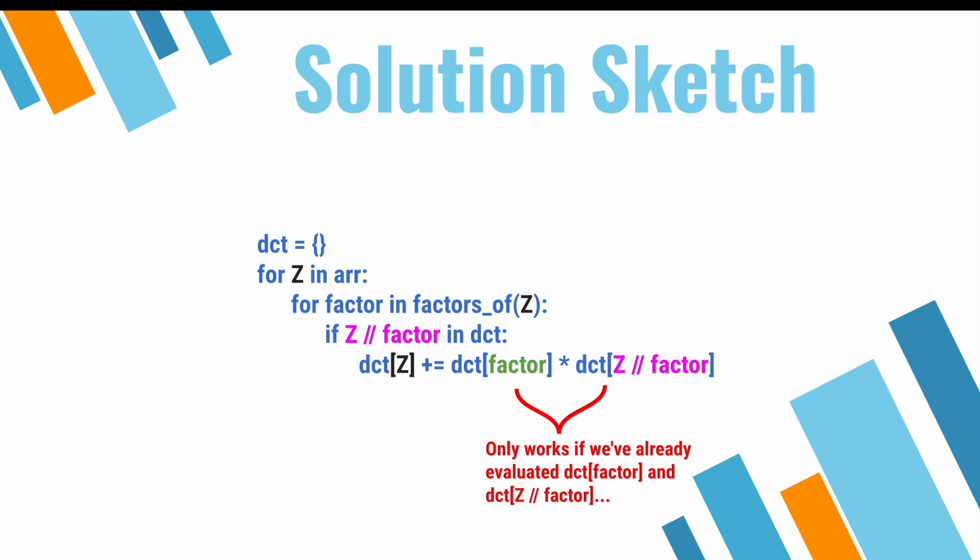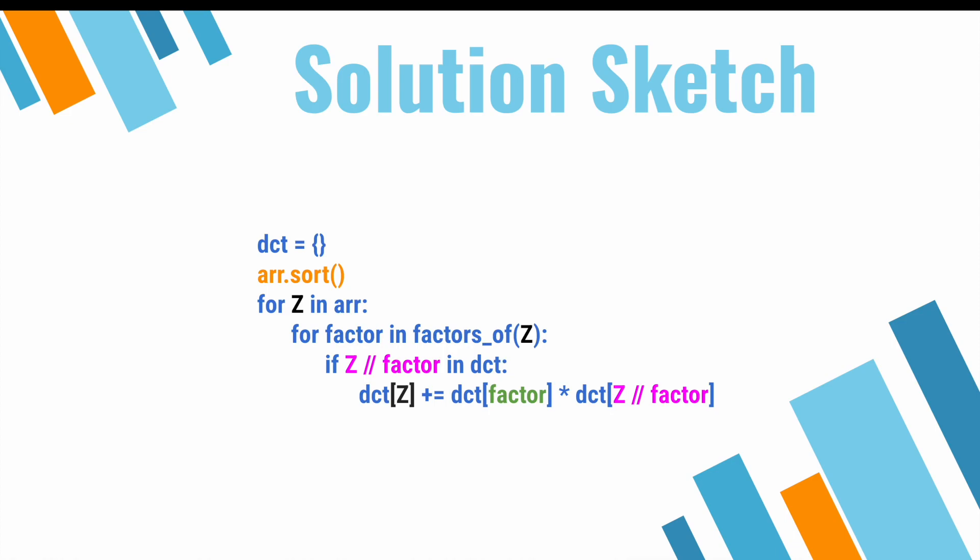So then given that information, can you think of a way that we can iteratively populate this dictionary so that x and y are guaranteed to be populated with the correct value before we evaluate z? Think about it and pause the video. I'll reveal the answer in 3, 2, 1. The answer is that we should just sort our array and then iterate through the sorted order to populate our dictionary. So let's do that.